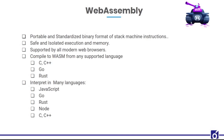WebAssembly is also called Wasm. It is a portable binary code instruction format introduced in 2015. It enables compilation of high-level programming languages like C, Java, C++ or Rust into Wasm. A developer can write code in any of these languages and then run it on the web — this is what WebAssembly supports. WebAssembly compiles the code into bytecode that can run in the web browser, which is then converted into native machine code and finally executed.